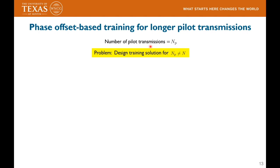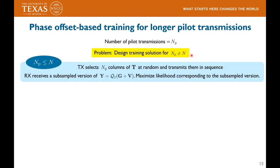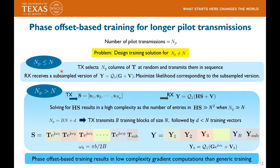Throughout the presentation, we considered a training block of size N×N where the number of pilots transmitted N_P equals the number of antennas N. How can we adapt this training solution when N_P is different from N? For N_P smaller than N, the transmitter simply transmits N_P columns from the training block T. When N_P is larger than N, we express N_P as B×N + D where B is an integer and D is an integer smaller than N. The transmitter transmits B training blocks that are phase-rotated versions of T. Phase-rotation-based training results in distinct channel measurement blocks at the receiver and enables low-complexity gradient computations compared to generic training.